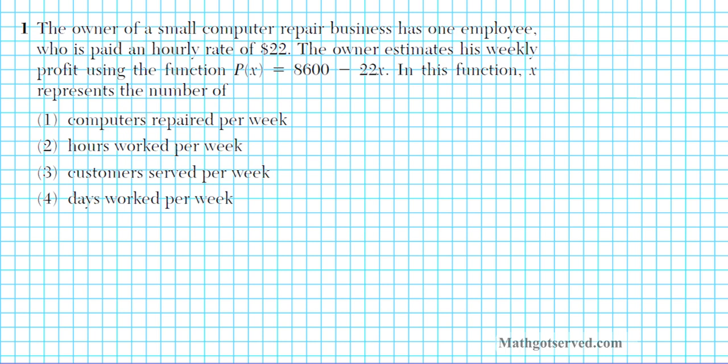It reads: The owner of a small computer repair business has one employee who is paid an hourly rate of $22. The owner estimates his weekly profit using the function P(x) = 8600 - 22x. In this function, x represents the number of... If you take a look at this paragraph right here, you have 22x appearing here and you also have 22 over here.